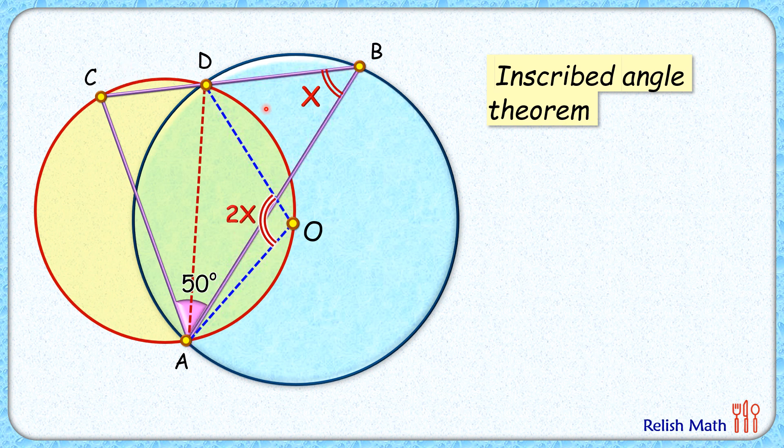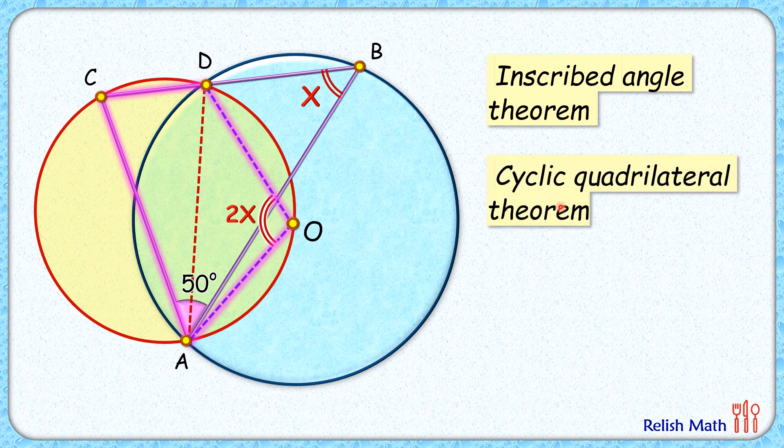Now focusing on the yellow circle, DOAC is a cyclic quadrilateral. By the cyclic quadrilateral theorem, the sum of opposite angles is supplementary. So angle O and angle C sum to 180 degrees, which means angle C equals 180 minus 2x.